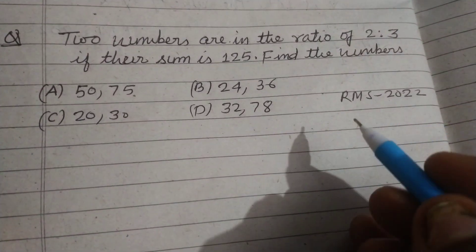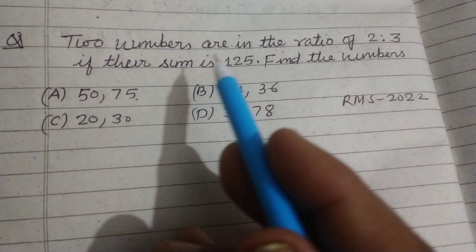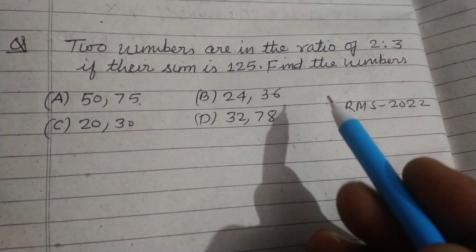Hello students. Welcome to this YouTube channel RMS2022. The question is: two numbers are in the ratio of 2:3. If their sum is 125, find the numbers.